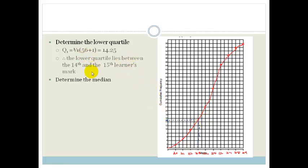Now to determine the median, we're going to take half of 56 plus one, which is 28.5. So therefore, the median lies between the 28th and 29th learner. So therefore that's 28 and that's 30. So I'm going to take my line across here and I'm going to drop it down. And you can see that it's much closer to 25 than 24. So I would say that is 24.75.